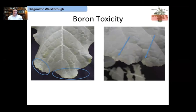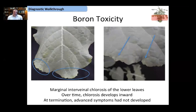Moving on to boron toxicity — our last element. It's important to note this is a toxicity, not a deficiency, resulting from applying too much of the element. Boron toxicity starts as marginal burning of the leaf or interveinal chlorosis, moving in towards the center of the leaf.